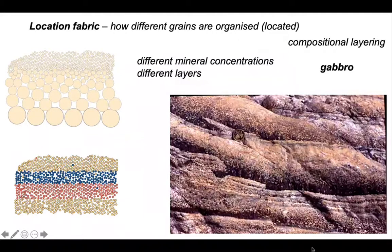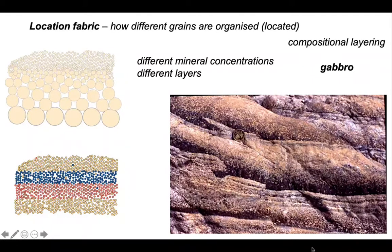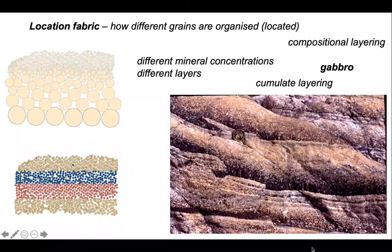Here's another example where we're dealing with a location fabric defined by different mineral concentrations in different layers. This is in a gabbro, and there's a special term we would apply to this sort of feature having established it's a location fabric: this is cumulate layering. So another example of a genetic term that arises having described the rock using the purely descriptive term location fabric.